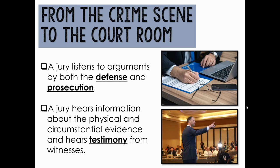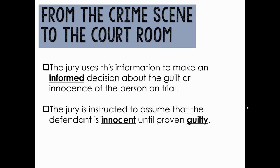A jury is going to listen to arguments by both the defense and the prosecution. A jury hears information about the physical and circumstantial evidence, and they can also hear testimony from witnesses. The jury uses the information presented in the trial to make an informed decision about the guilt or innocence of the person on trial. The jury is instructed to assume that the defendant is innocent until proven guilty, so it's the job of the prosecution to prove the guilt of the defendant.